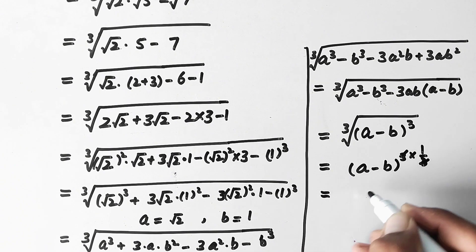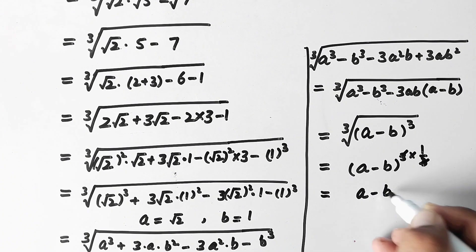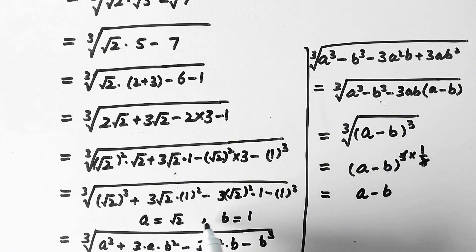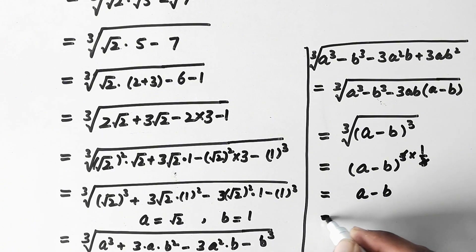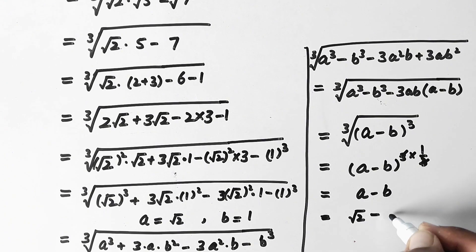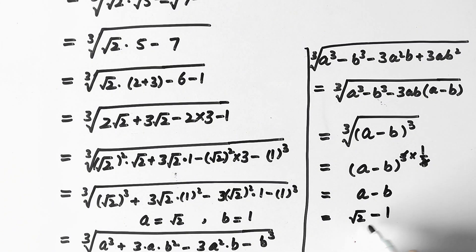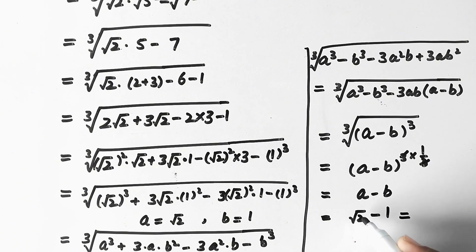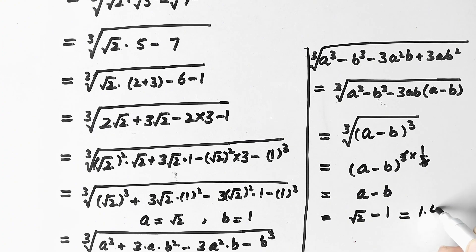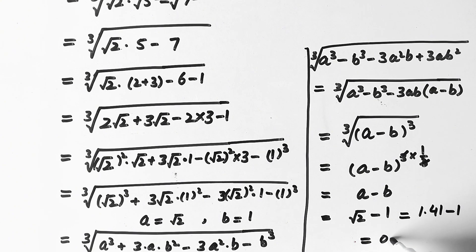And we are left with a minus b. Recalling our assumption: a equals square root 2 and b equals 1, so the answer is square root 2 minus 1. This can be further simplified, as square root 2 equals 1.41, minus 1. So our final answer is 0.41.